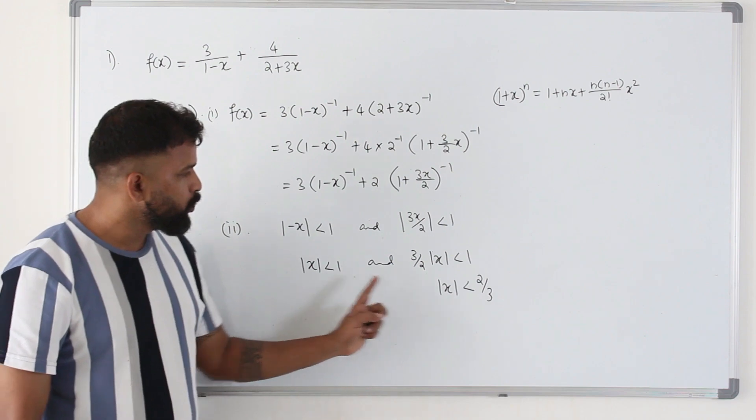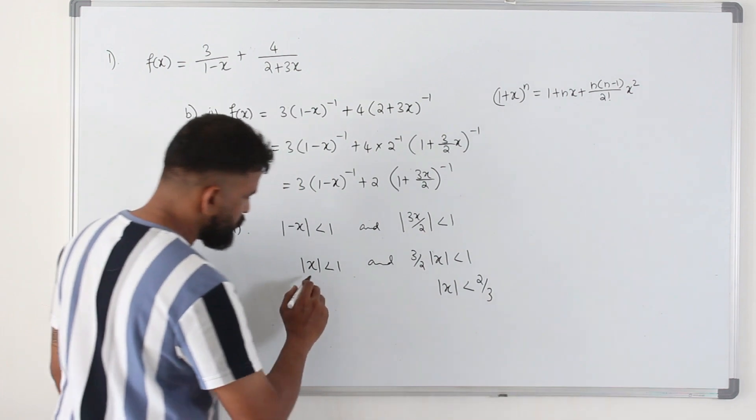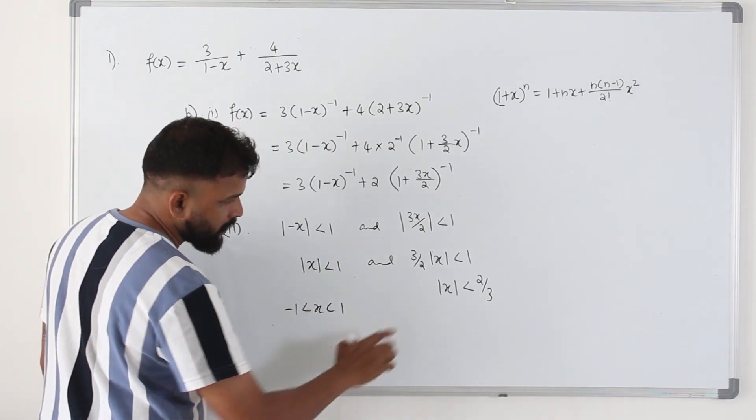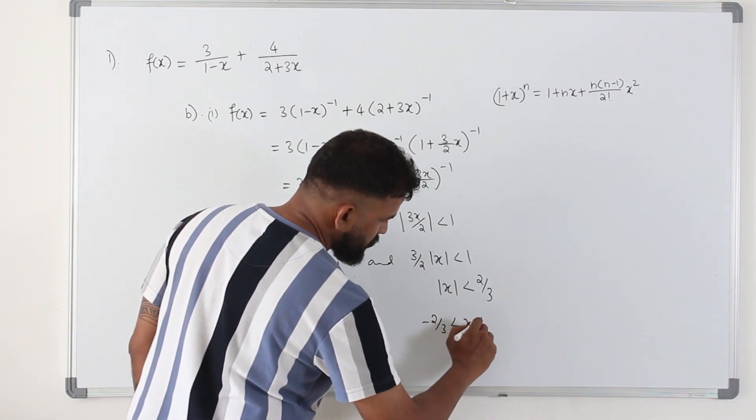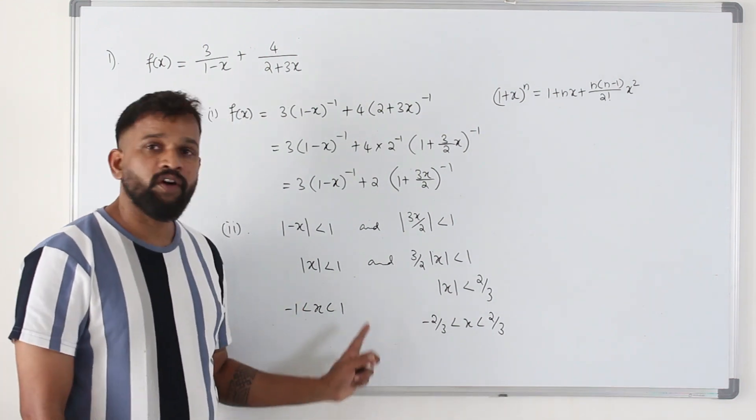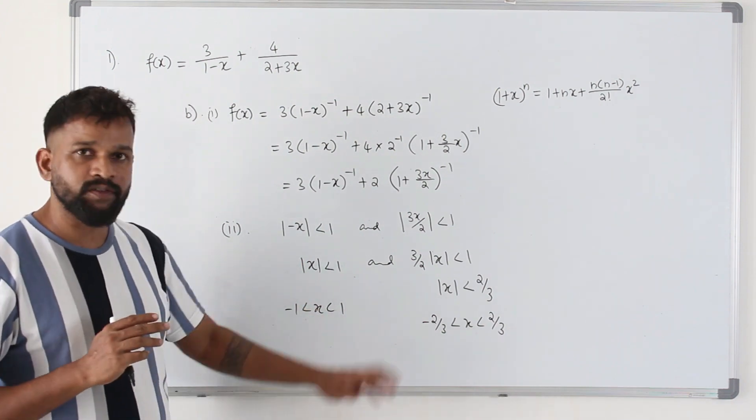So when you have two inequalities, you need to find the intersection of this. It's basically, the first one is basically minus 1 to 1. This one, without modulus sign, you can write it as, write it as this way. So you need to find the intersection of these two inequalities. You don't need to do that. I will show you a shortcut. But I am trying to explain this first.